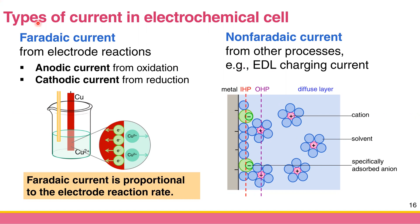The Faradaic current can be categorized further into two types, because you can make either oxidation or reduction. The current from oxidation is called anodic current, and the current from reduction is called cathodic current. This is because oxidation occurs at the anode, and reduction occurs at the cathode.